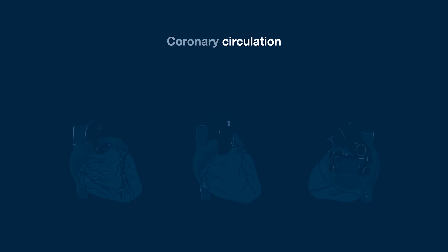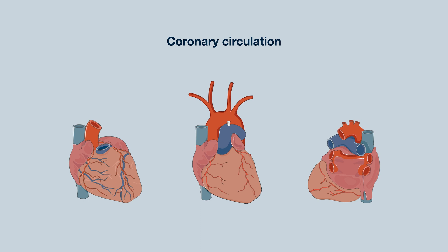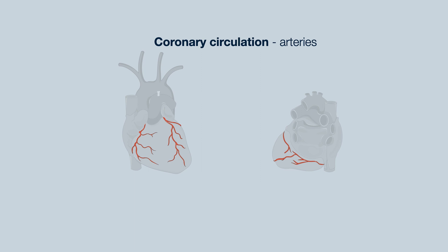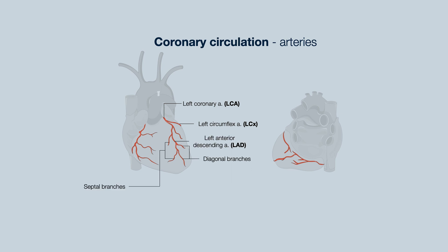We will now provide a simplified overview of the coronary circulation. Note that the left and right coronary arteries come from the base of the aorta. Here's the left coronary artery, which runs along the coronary sulcus. The branches of the left coronary artery include the left circumflex, which supplies the lateral aspect of the heart, and the left anterior descending artery, which has septal and diagonal branches. The left circumflex extends posteriorly and supplies the posterior lateral aspect of the heart.